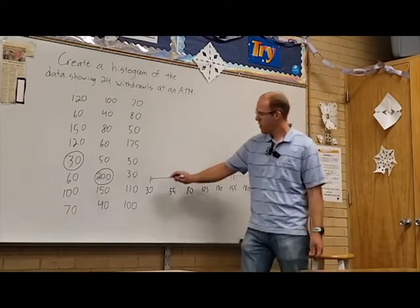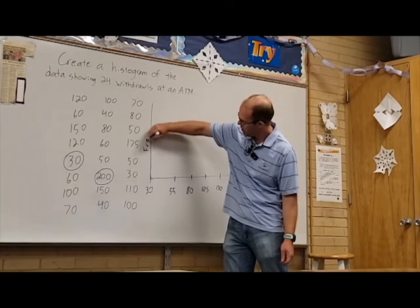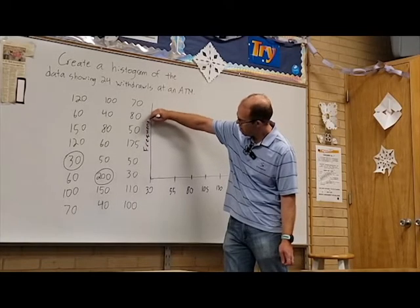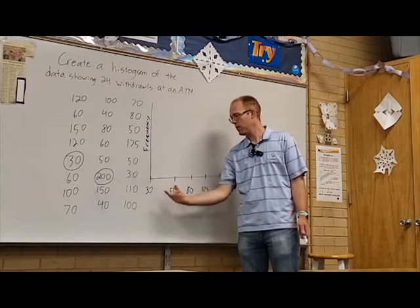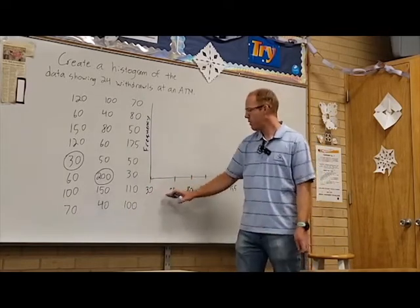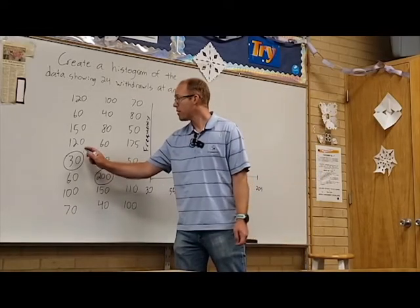Next, we just need to figure out what our frequency is. That's simply done by calculating how many fall in this particular interval. Between 30 and 55, we're going to count that. We get 30, I'm going to cross these off as I count them.